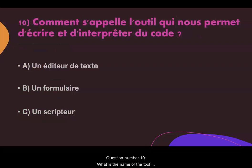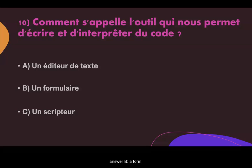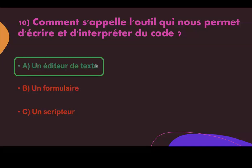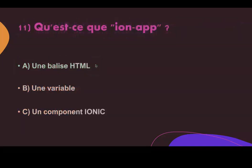Question number ten. What is the name of the tool that allows us to write and interpret code? Answer A: a text editor. Answer B: a form. Answer C: a writer. The correct answer is A, a text editor.